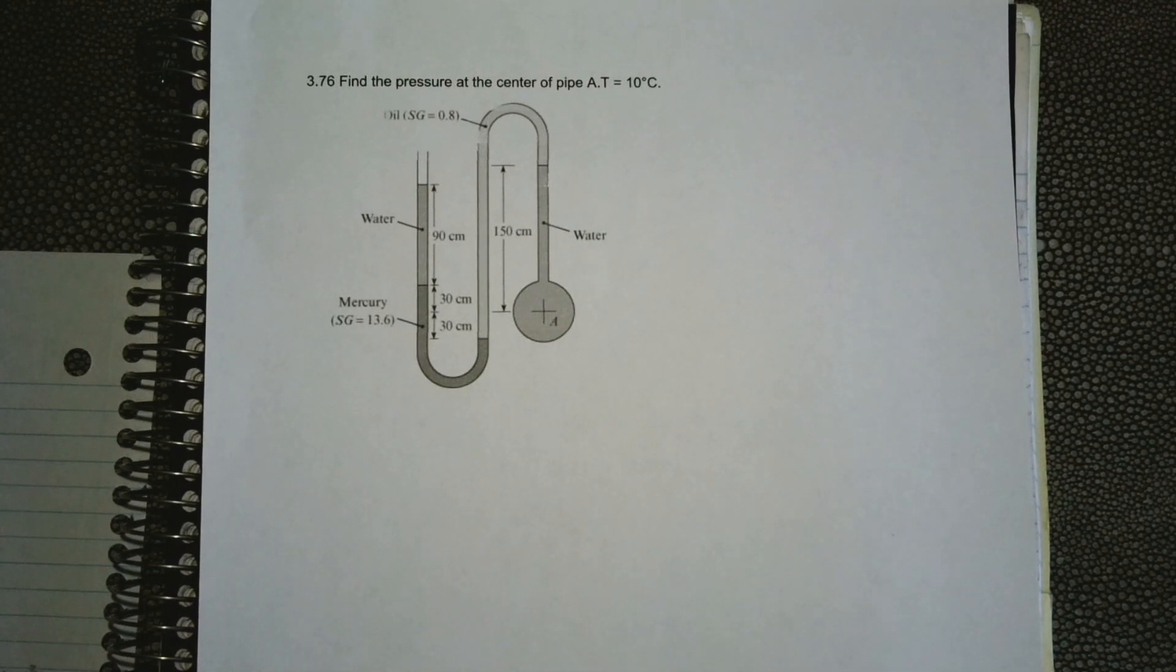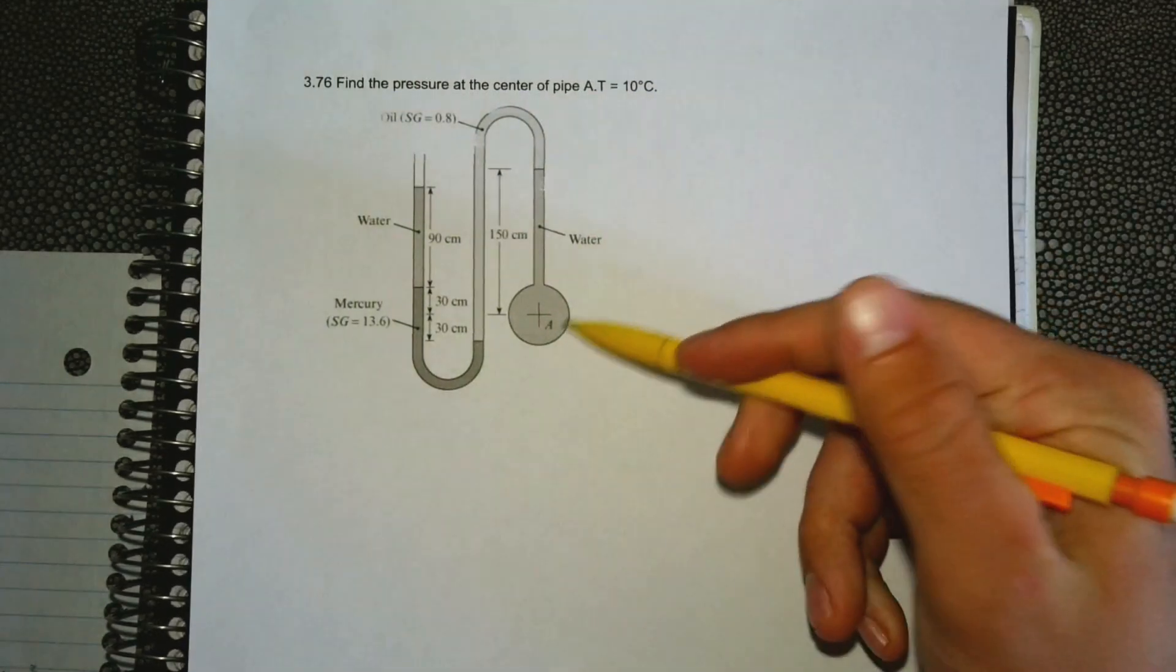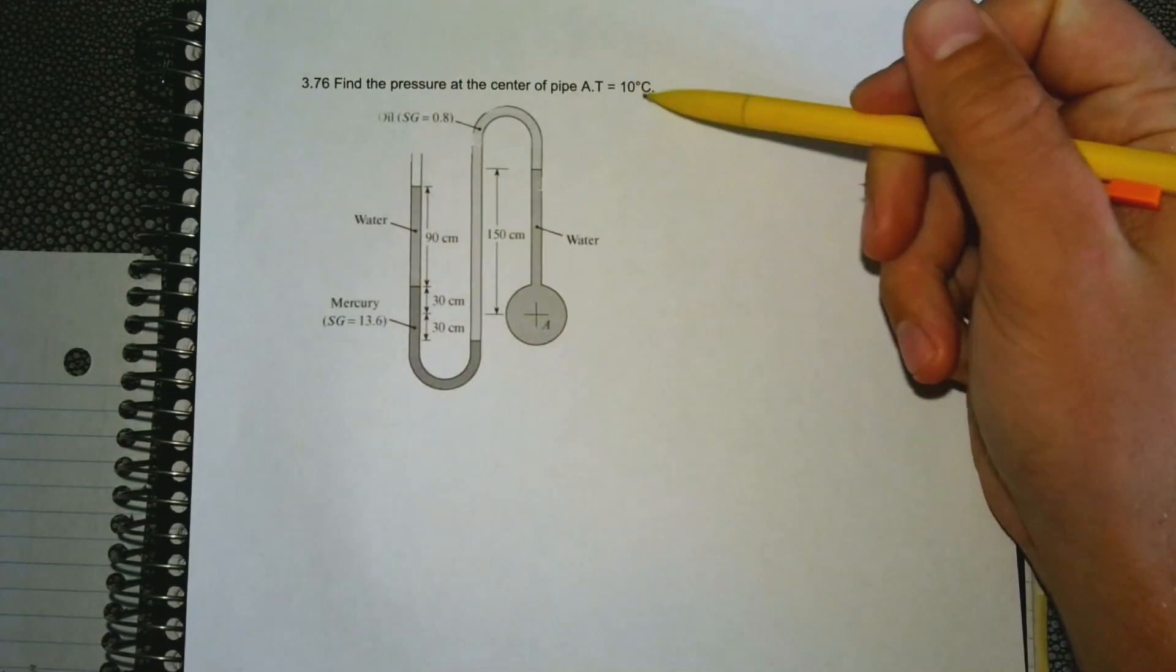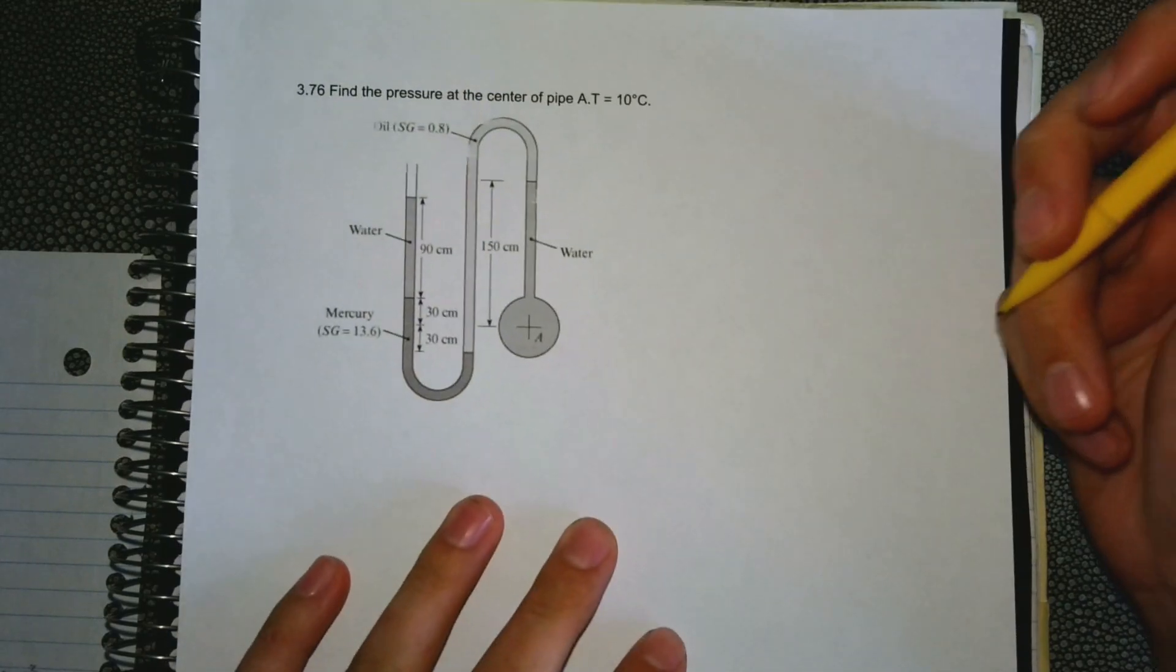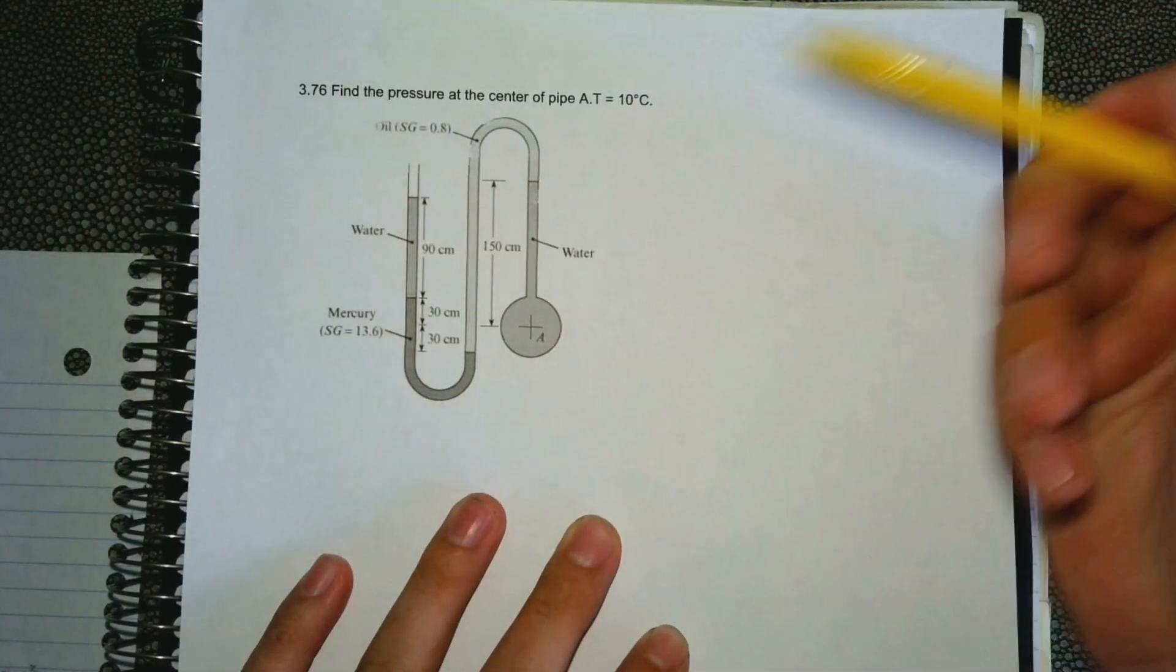Question 3.76 says find the pressure at the center of pipe at A, this point right here. The temperature of all the liquids is 10 degrees Celsius. It only applies to water in this case.